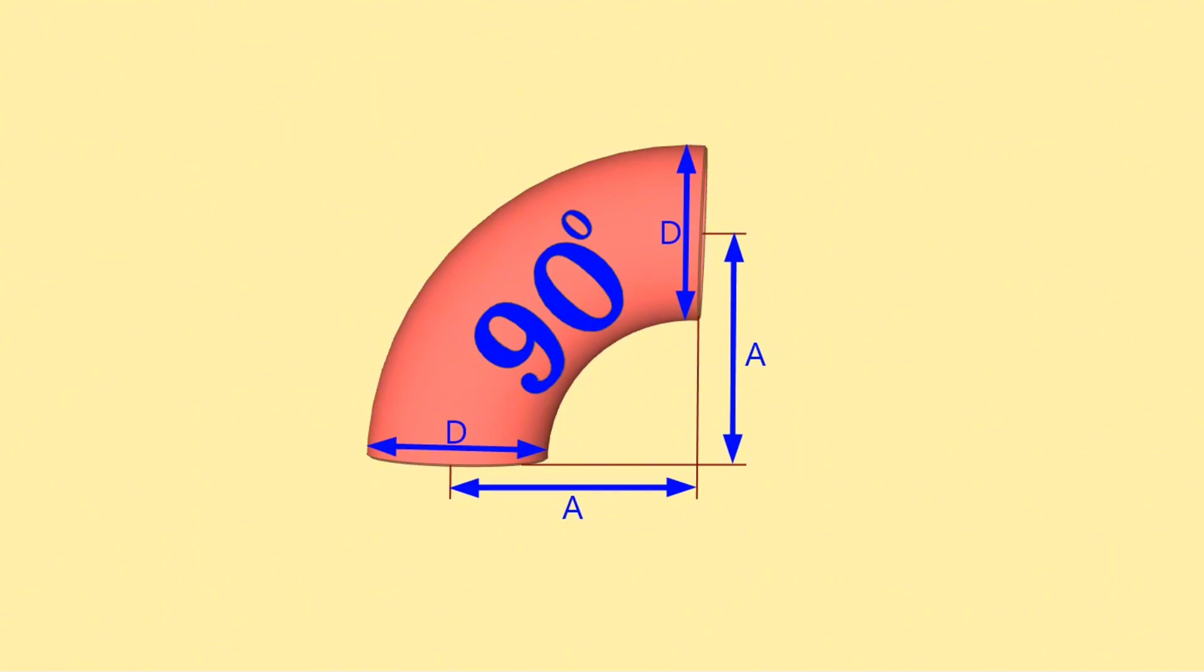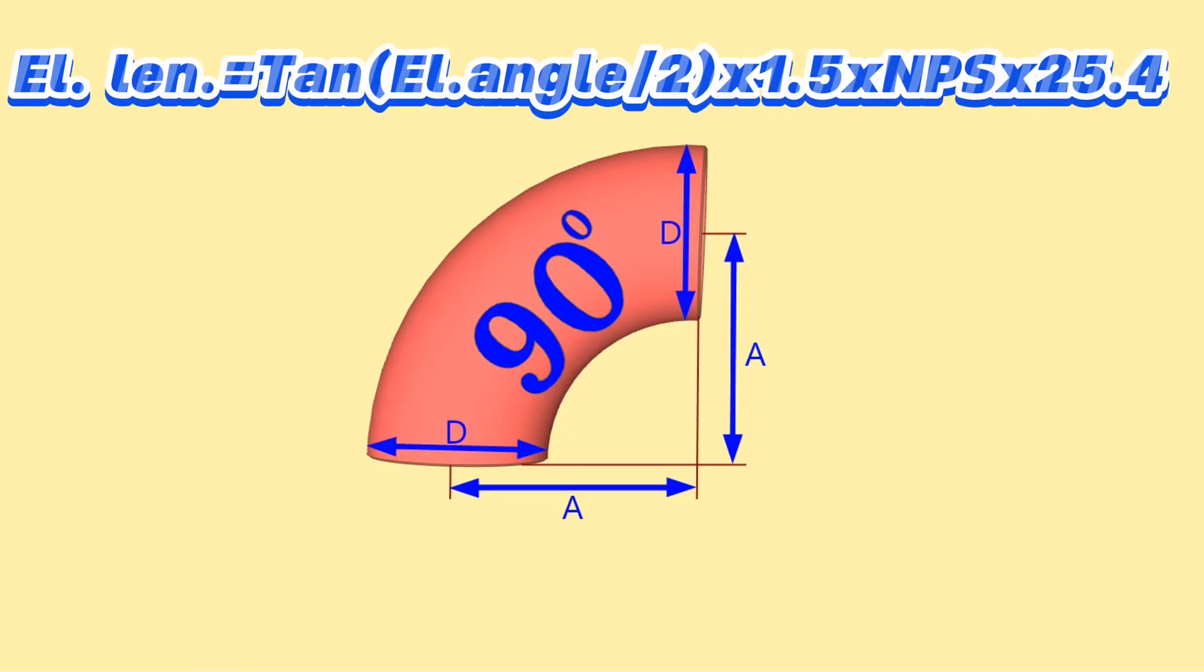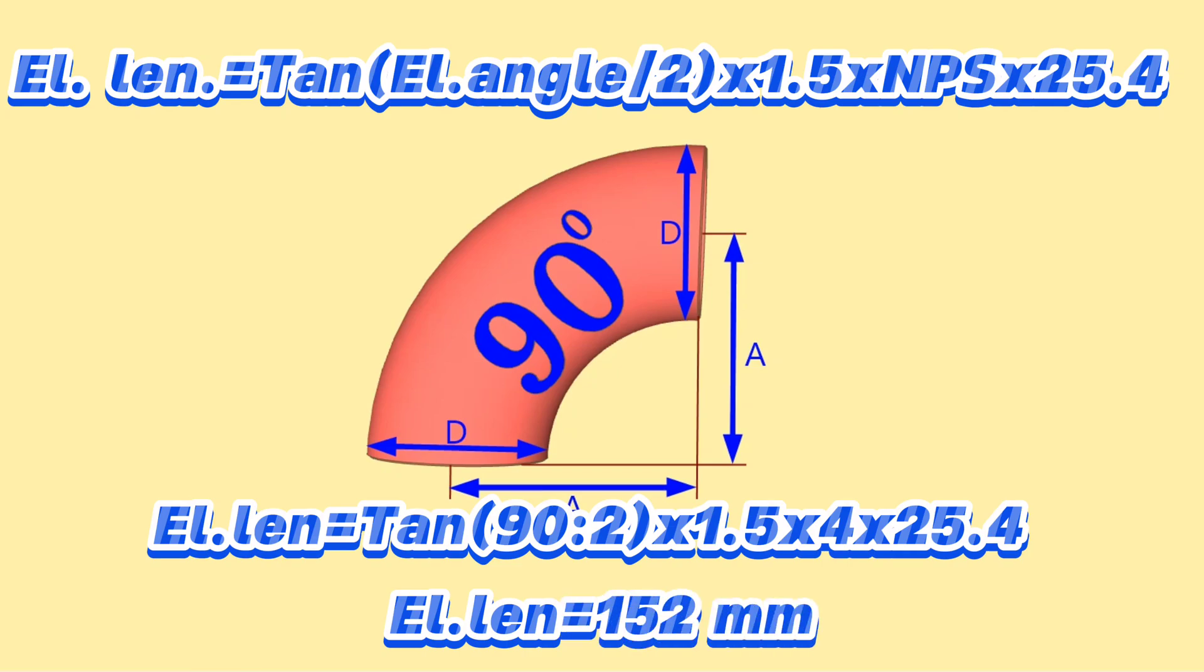Let's calculate the center to end dimension of a 4 inch 90 degree elbow based on the formula above, and then look at the chart to check the result. As per the formula, 4 inch long radius elbow length equals tangent of 90 degrees divided by 2, times 1.5, times nominal pipe size 4, times 25.4. Using a scientific calculator, we found 4 inch long radius elbow length equals 152 millimeters.